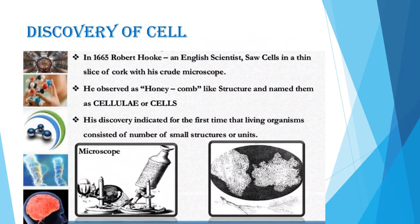How were cells discovered? Cells are so tiny that they cannot be seen with the naked eye. They were first discovered by Robert Hooke in 1665. He was an English scientist who saw cells in a thin slice of cork with a screwed microscope. He observed a honeycomb-like structure and named them cells. His discovery indicated for the first time that living organisms consist of a number of small structural units.